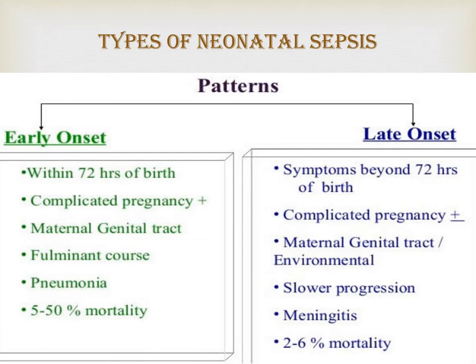Preterm neonates are at higher risk for sepsis and infections than term neonates. The increased susceptibility in preterm infants is mainly due to a deficient immune system, particularly decreased IgG antibodies and incompetent opsonization and complement activation, as well as a compromised innate immune system caused primarily by an immature epithelial barrier. The increased need for invasive devices such as vascular access, endotracheal intubation, feeding tubes, and urinary tract catheters are all associated with an increased risk of sepsis in preterm neonates.